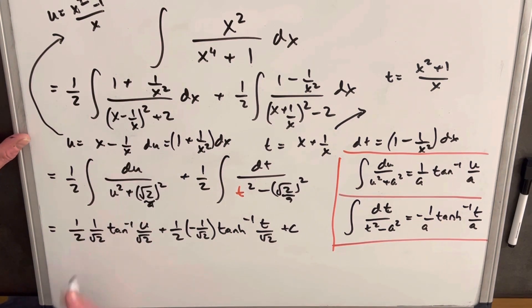We're going to combine these two here. We're going to have 1 over 2 square root of 2, arctan, or u, which we turn into x squared minus 1 over x. But don't forget a square root of 2.